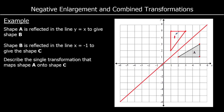Then shape B is reflected in the line x equals negative 1 to get shape C. This point was 2 away, so it would be 2 away on the other side; this one was 4 away, so 4 away on the other side; and again 2 away, so 2 away. So this is shape C.